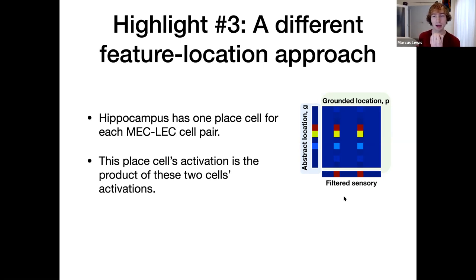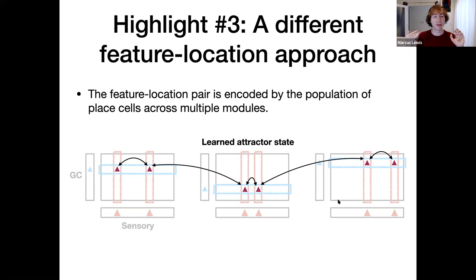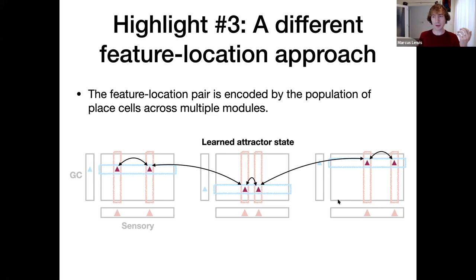The other review slide is that they treat place cells as products of two cell types: a given grid cell and a given sensory cell, and there is a place cell for that pairing. A feature-location pair transcends all of the modules — it's encoded by the population of place cells across multiple modules. The lateral entorhinal cortex sensory input anoints a set of columns, the grid cells anoint a set of rows, and the intersection is what becomes active. The only cross-talk between modules is at the level of these cells. They learn these attractor states like this.